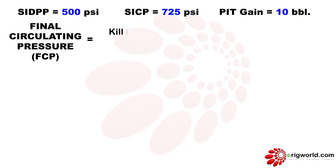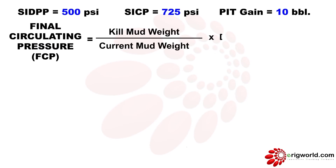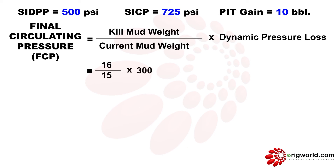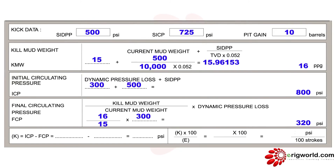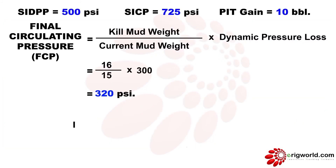The FCP formula is: kill mud weight divided by current mud weight, multiplied by dynamic pressure loss. So 16 divided by 15, multiplied by 300, gives 320 psi. K is ICP minus FCP — that is 800 minus 320 — which gives 480.